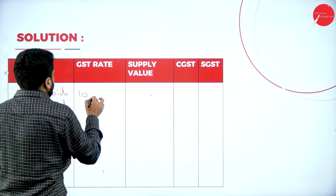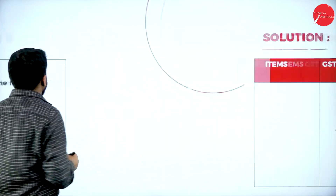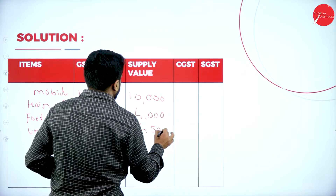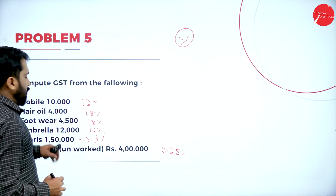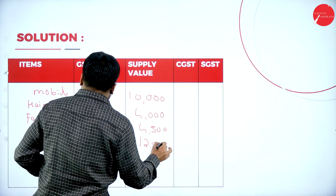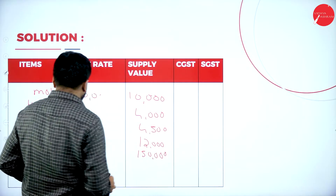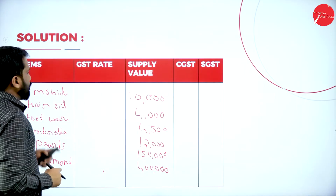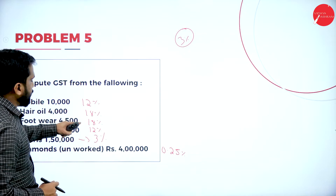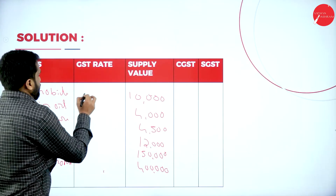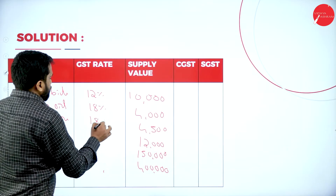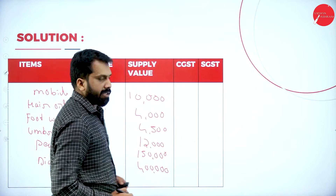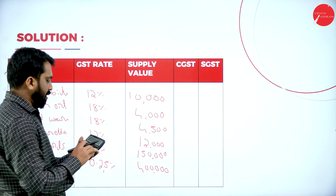The supply values are: mobile ₹10,000, hair oil ₹4,000, footwear ₹4,500, umbrella ₹12,000, pearls ₹1,50,000, and diamond ₹4,00,000. The GST rates are: mobile twelve percent, hair oil eighteen percent, footwear eighteen percent, umbrella twelve percent, pearls three percent, and diamond 0.25 percent.